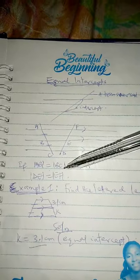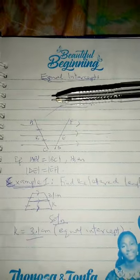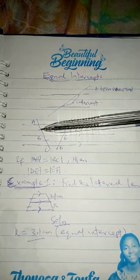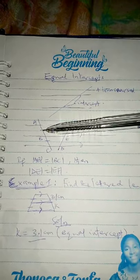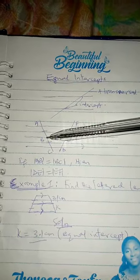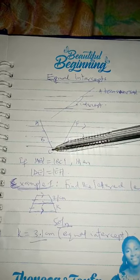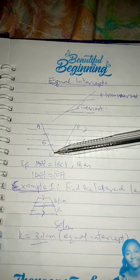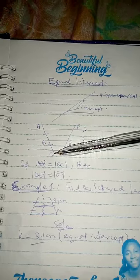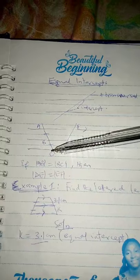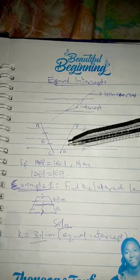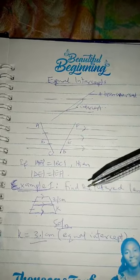Here are transversals running over them. When you check this transversal, you see they have some markings on it. This is to tell you that this intercept, which is AB, is equal to the intercept BC. They are the equal intercepts. And if three or more parallel lines cut off equal intercepts on a particular transversal, then they will also cut off equal intercepts on any other transversal.